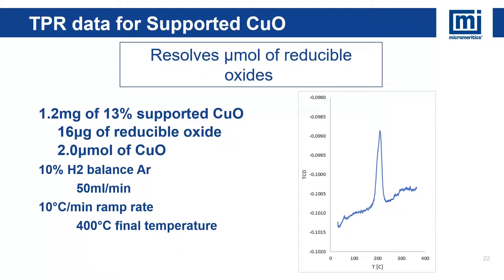To demonstrate this, the same 13% copper oxide material was used but at the smallest amount without any additional modifications to the sample. One bead of the material weighing 1.2 milligrams was measured, which equates to 2 micromoles of copper oxide based on the loading. The figure on the right is the corresponding TPR. The reduction peak temperatures and peak areas could be readily resolved and are clearly separated from the signal noise or baseline.